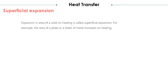Superficial expansion is the expansion in the area of a solid on heating. For example, the area of a plate or sheet of metal increases on heating.